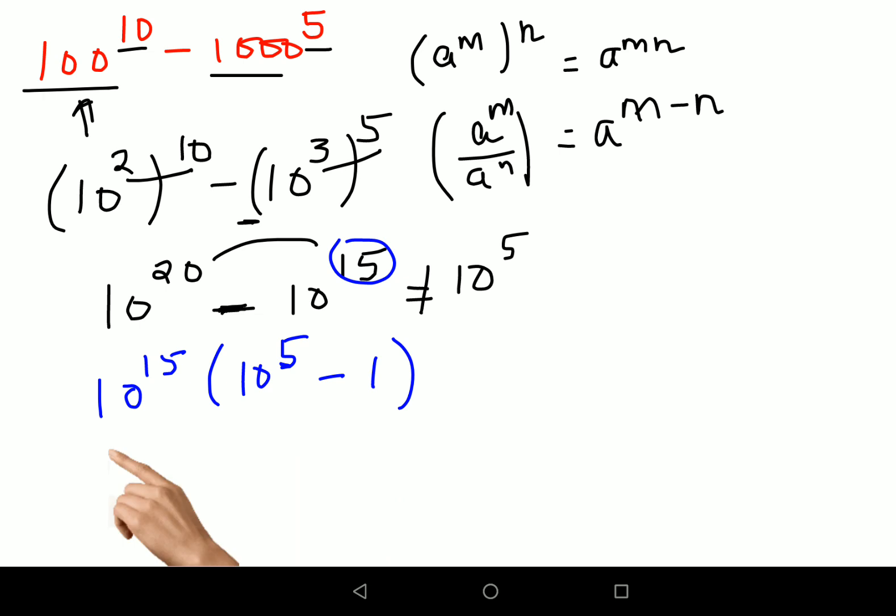So now this can be written as 10 raised to 15 and this can be written as 1 and how many zeros? 5 zeros, minus 1.